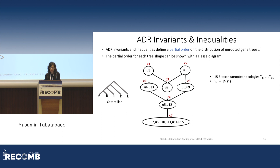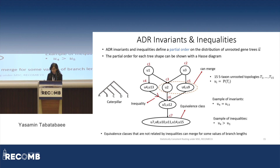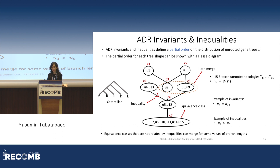The inequalities and invariants derived from ADR's identifiability theory define a partial order on the distribution of unrooted gene trees. For each rooted five-taxon tree, this partial order can be shown with a Hasse diagram, as seen in this figure. I will denote the 15 unrooted five-taxon trees as T1 to T15 and their probabilities as U_i values. Each circle in the Hasse diagram defines an equivalence class — all gene tree probabilities inside that class must be equal. For example, in class C4, U4 must equal U13, defining an invariant. Each directed edge between two classes shows an inequality where the source must have a greater probability value than the target — for example, U4 must be greater than U5. Importantly, this Hasse diagram depends only on the topology of the five-taxon tree and is independent of the branch lengths.